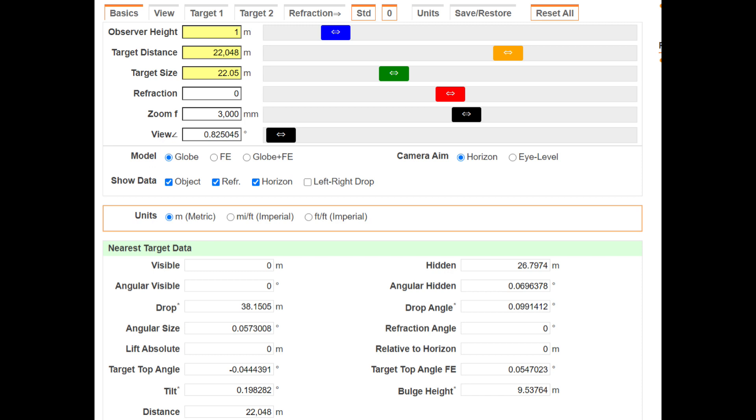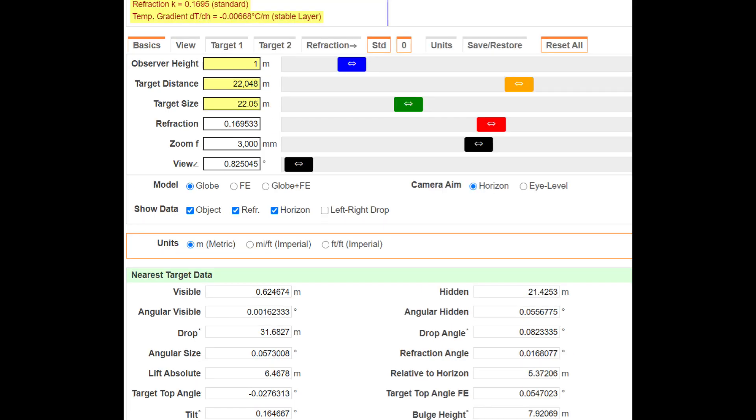Most days you're going to have very weak refraction and some days you're going to have strong refraction. Now, on a day with standard refraction, which is common and normal, the hidden part is going to be 21.4253. So, basically, you'll be able to see a half meter of that laser light beam. And since it's so bright, you will be able to see it on a day with standard refraction.